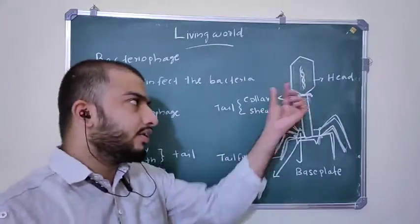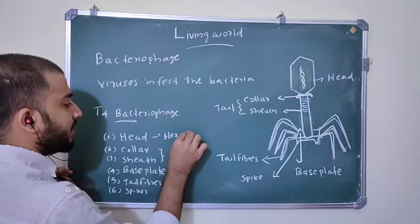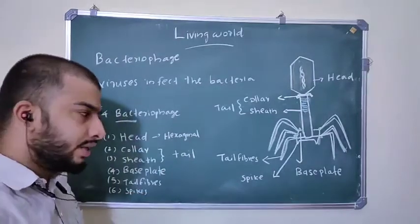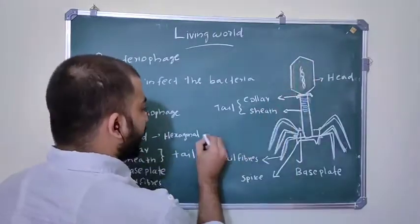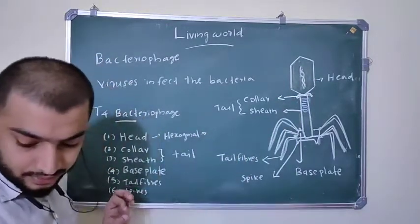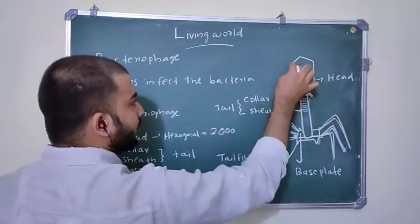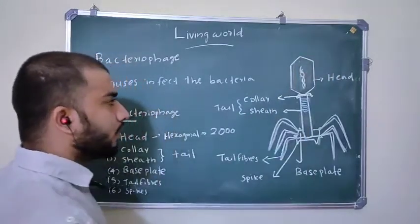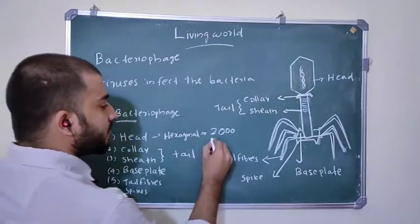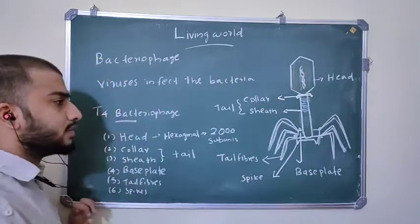The head region has a hexagonal shape. Inside this head, genetic material is found. The head is made up of around 2,000 protein subunits — that is the protein coat consisting of 2,000 subunits of protein.